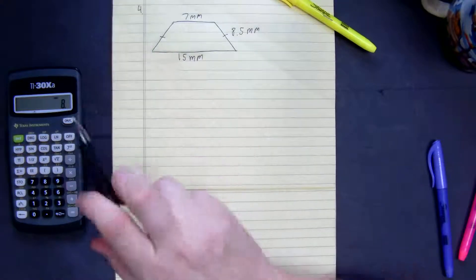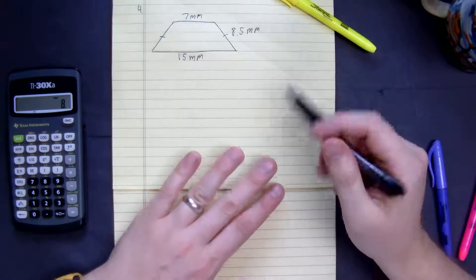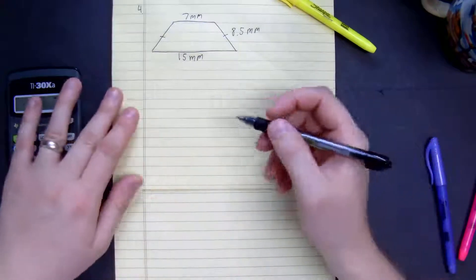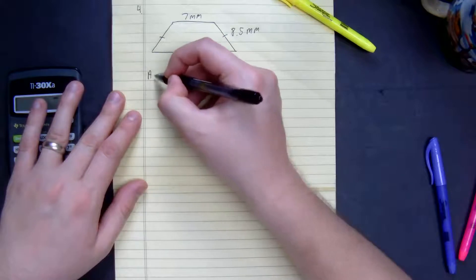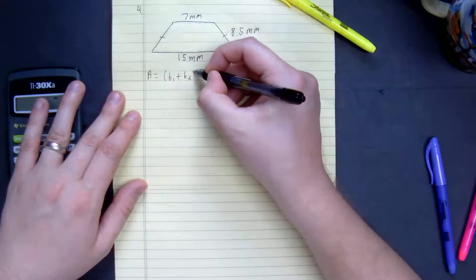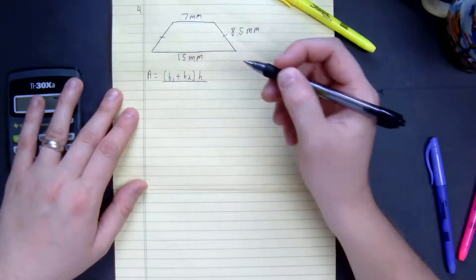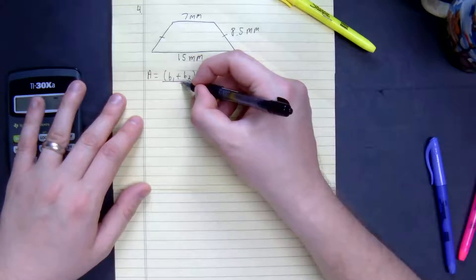We're looking at number 4, we want to find the area of this trapezoid. So the area formula for a trapezoid is equal to base 1 plus base 2 times h, so base 1 plus base 2 times the height, divided by 2.